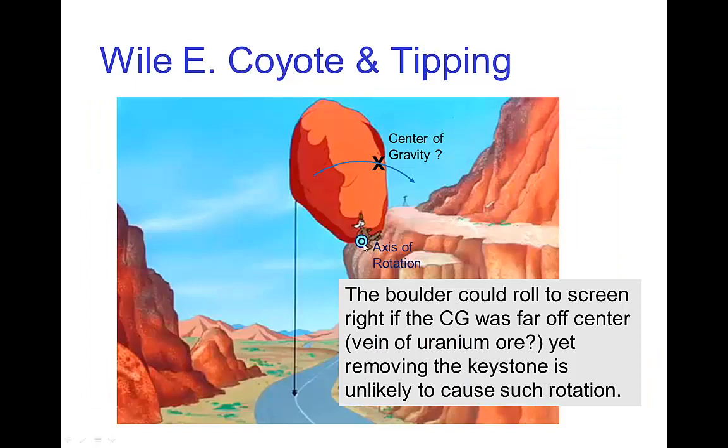So what happens is the rock surprisingly tips over towards screen right. Could that happen? Perhaps if the center of gravity was actually located on the far side of the rock for some unusual reason, like there was a vein of uranium in that rock. But of course, it's funny because it's surprising.